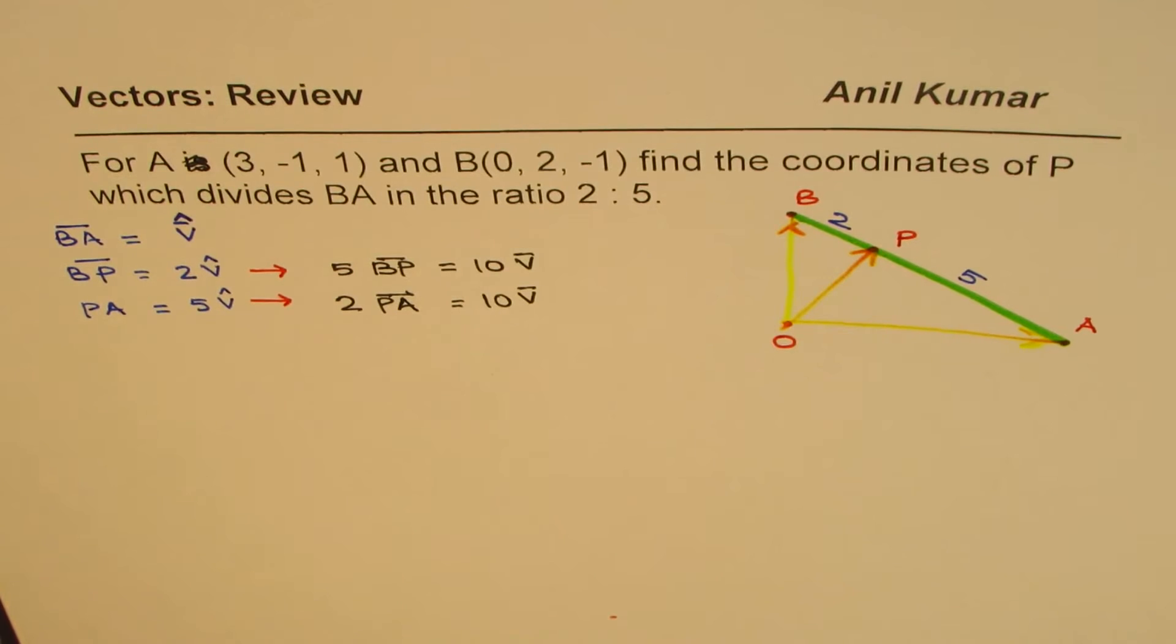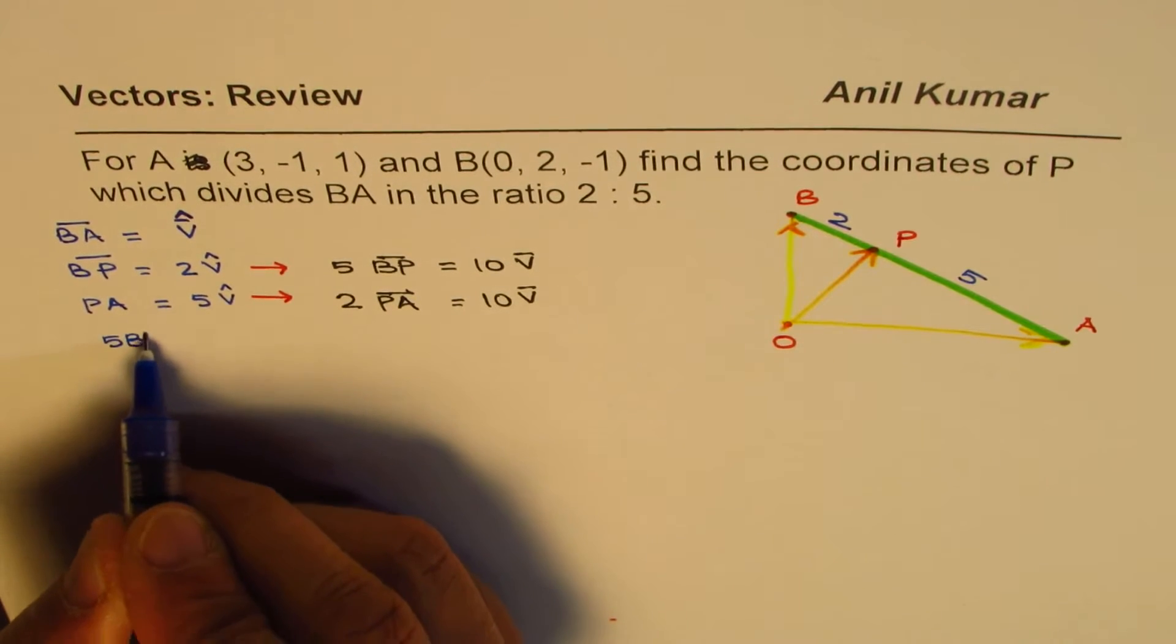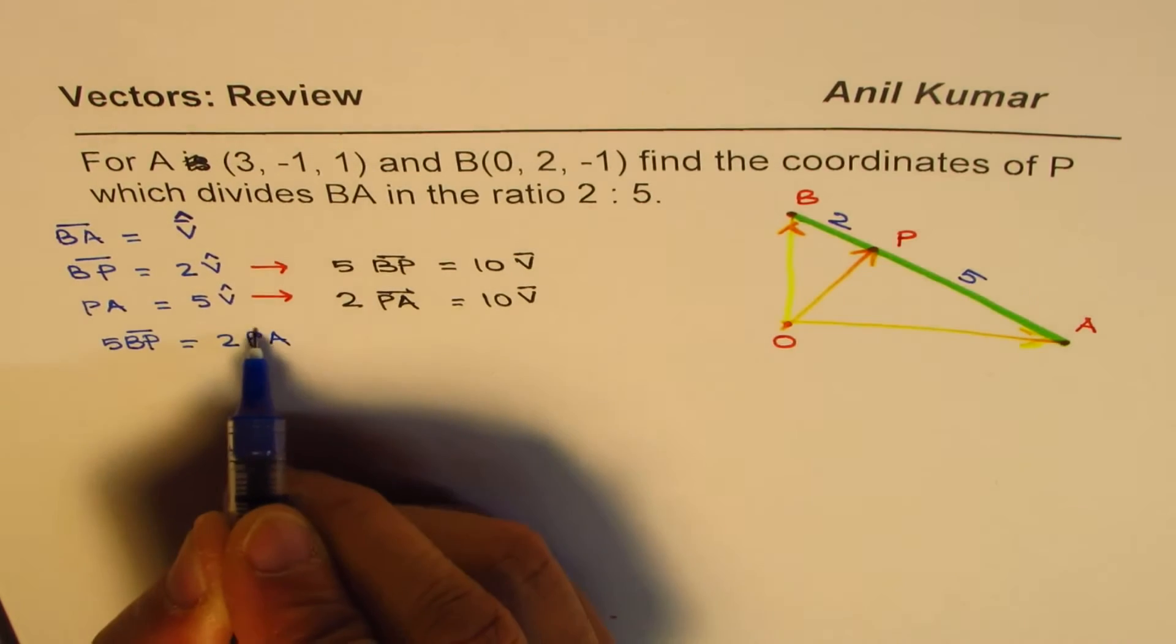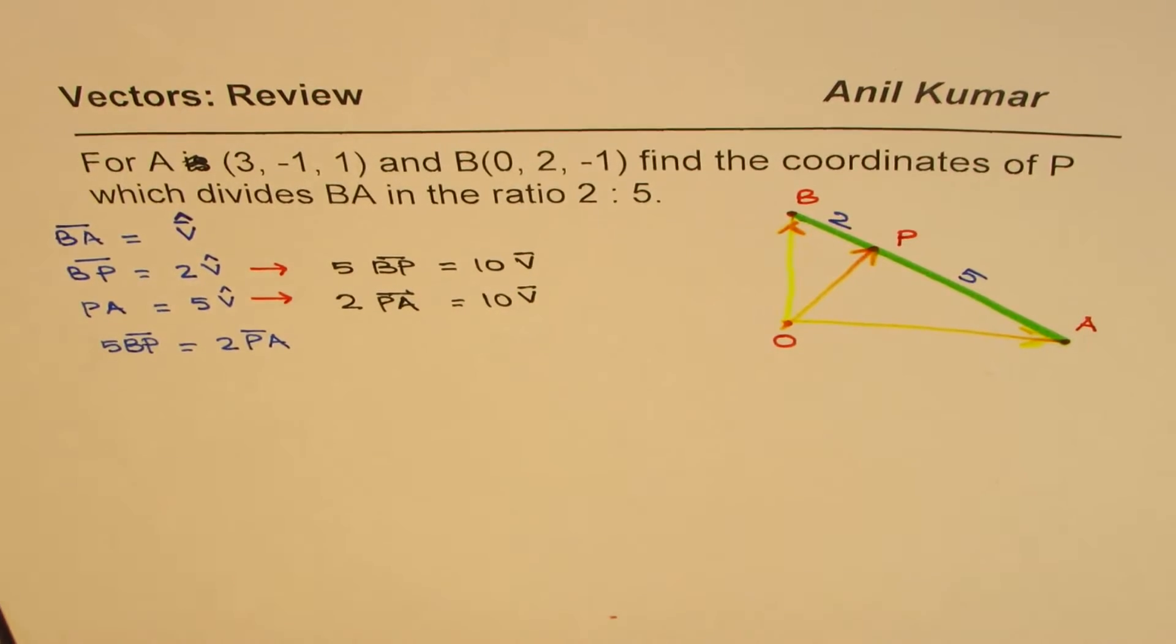So that indicates that these two parameters are equal. So from here, we can clearly write that 5 times BP equals 2 times PA. So you'll see how this unit vector helped us to form an equation. It's very critical.